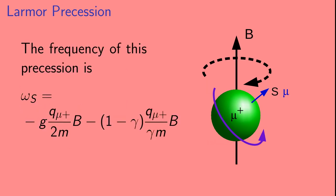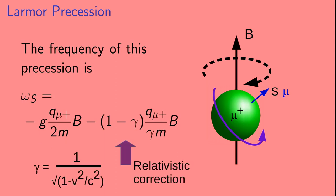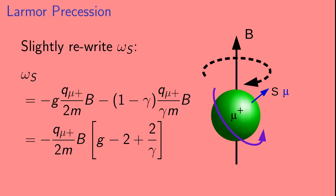The angular frequency of this precession, called omega sub s, or the spin frequency, has two terms. If you've seen Larmor precession before, you might have seen an expression containing only the first term. This first term contains g, which is what we're interested in measuring. The second term is a relativistic correction, where gamma equals 1 over the square root of 1 minus v squared over c squared, with v the velocity of the mu plus and c the speed of light. We can slightly rewrite this expression and find that there is a term that depends on g minus 2. We'll come back to this expression shortly.